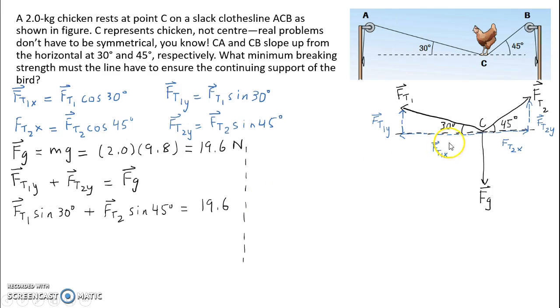Now, what we're going to look at is the horizontal dimension. The only two forces that we have in the horizontal dimension are FT1x and FT2x. Since the chicken is not moving horizontally or vertically, these two forces will need to equal each other. In this diagram, it may not seem like they're equal to each other, but it's not drawn to scale. In this situation, FT1x is equal to FT2x, since the chicken is not moving horizontally.